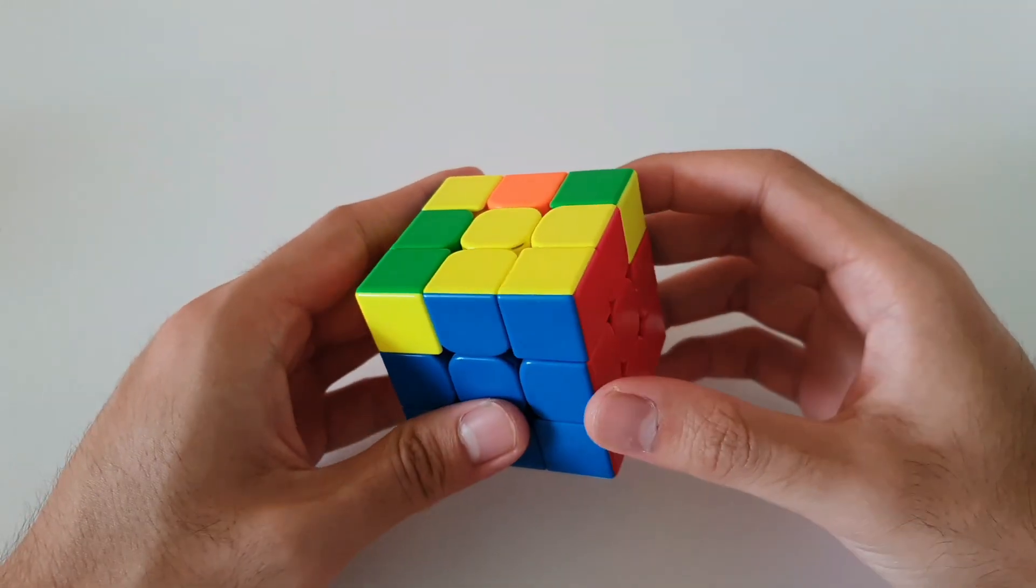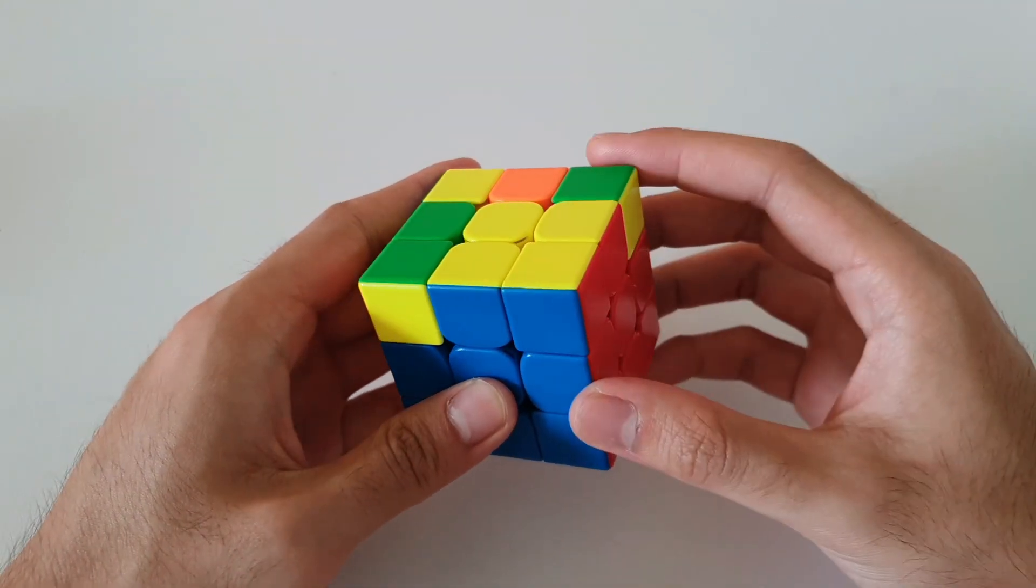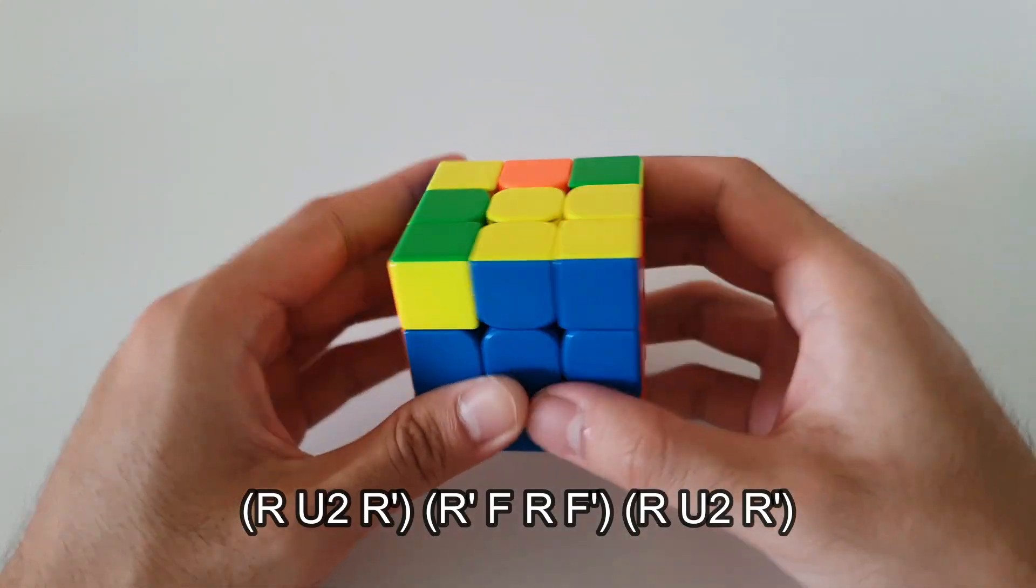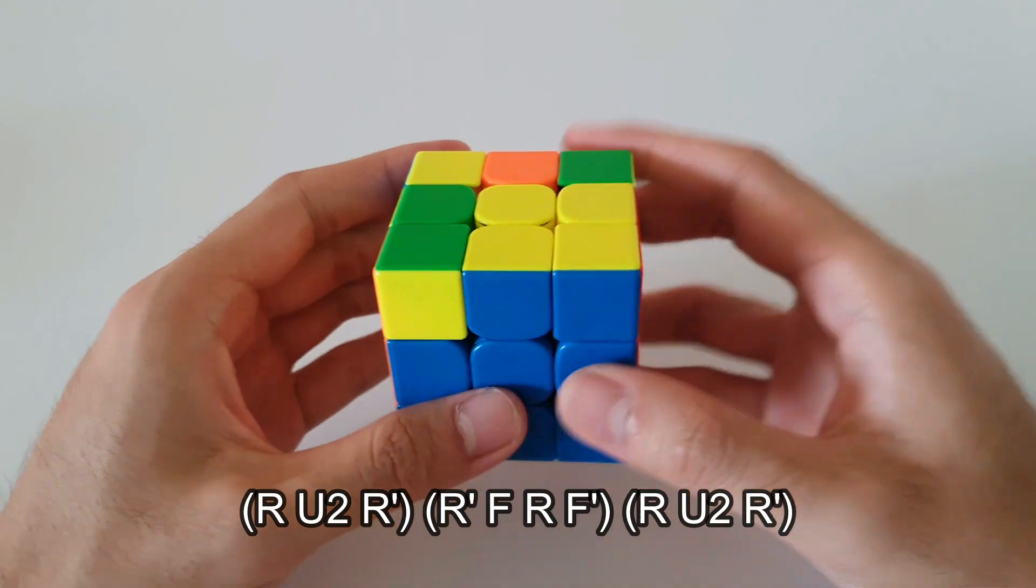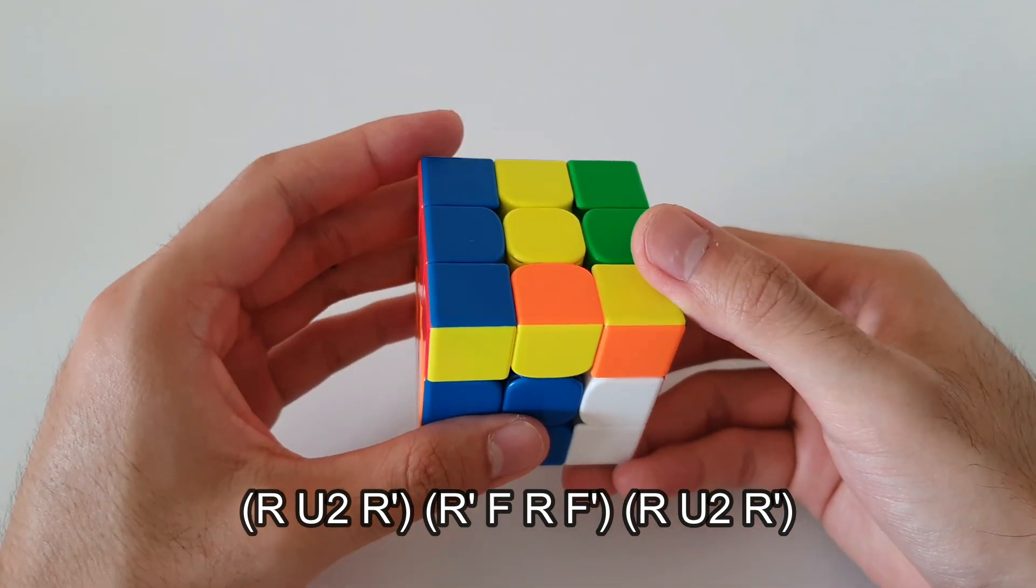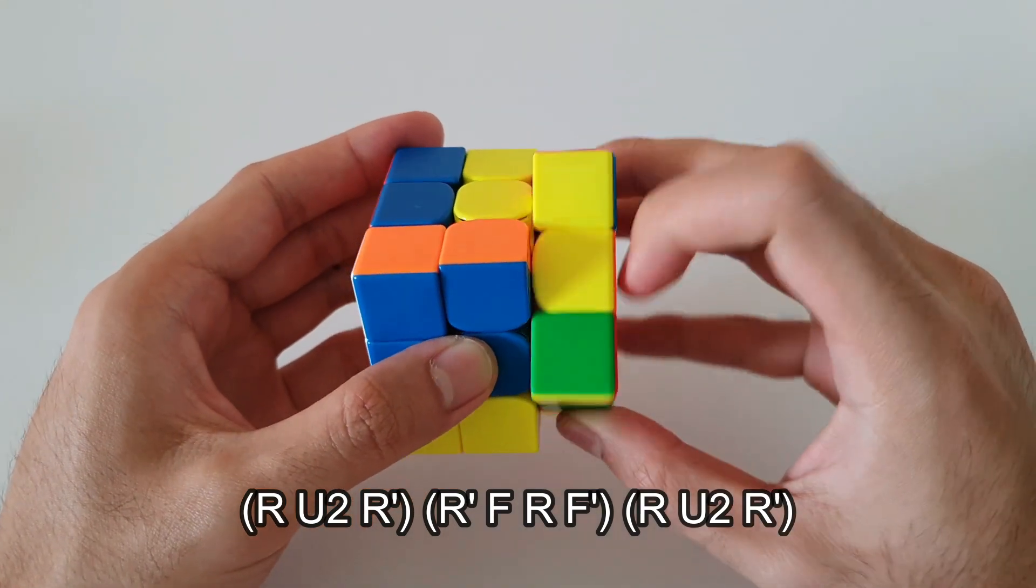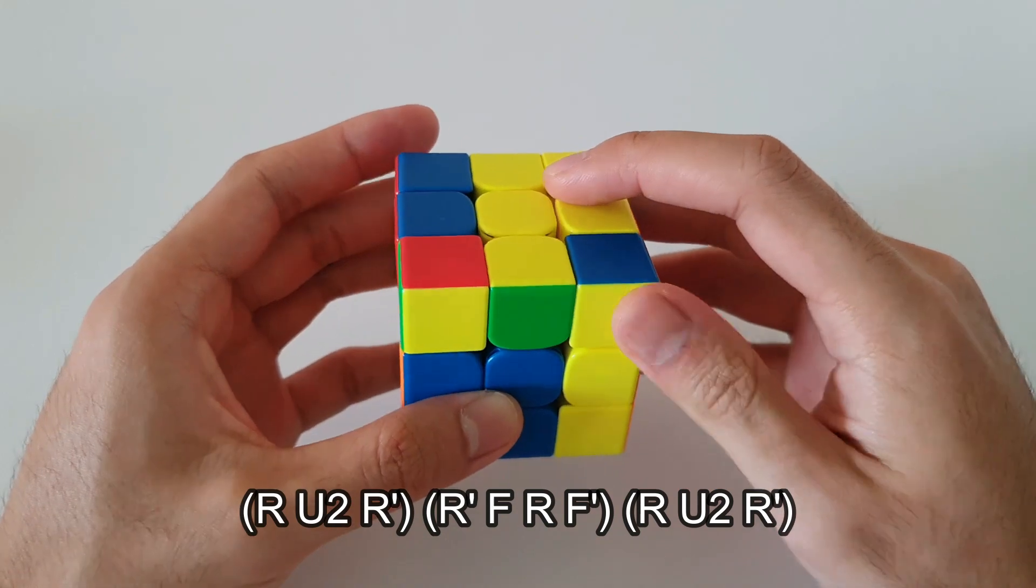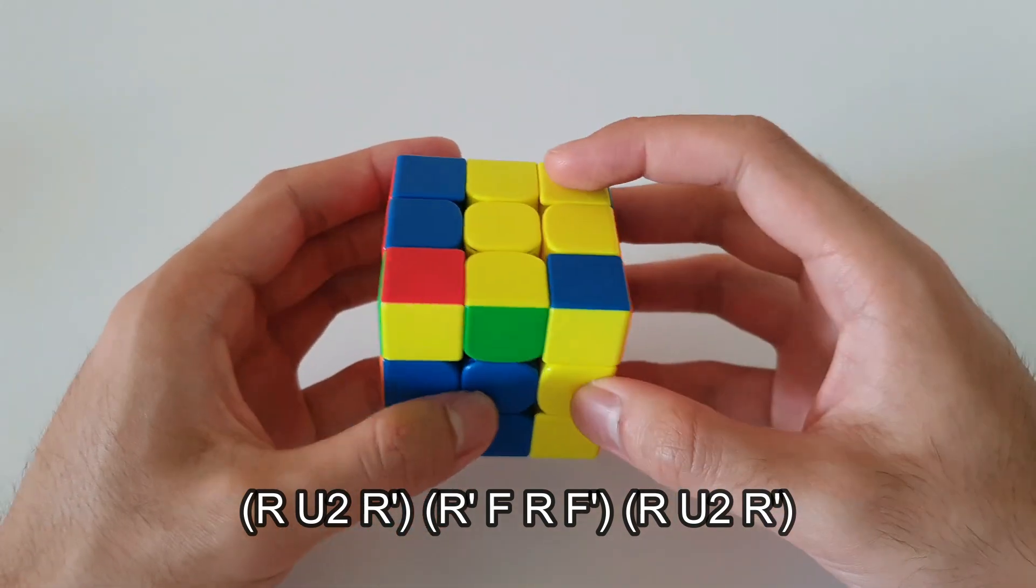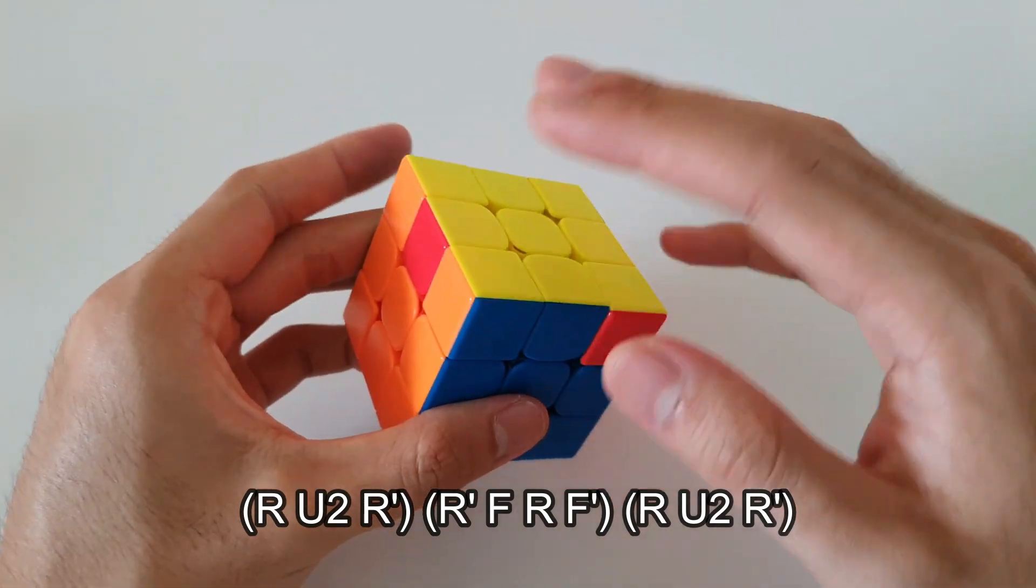So the algorithm starts off by moving this F2L pair into the back position here, like this. Once it's in that position, you can go straight into an R2, into a sledgehammer, like this. And then finally, you just want to insert this F2L pair into the front with a U2 move, like this. And that solves that OLL case.